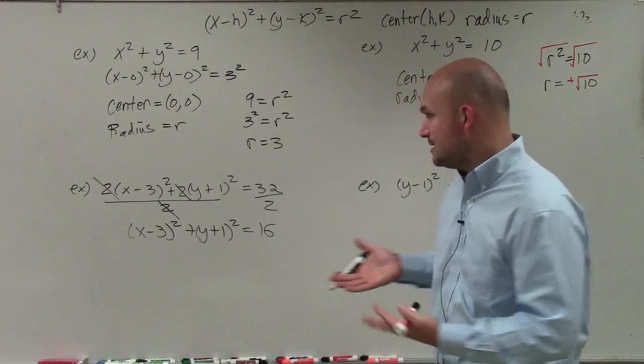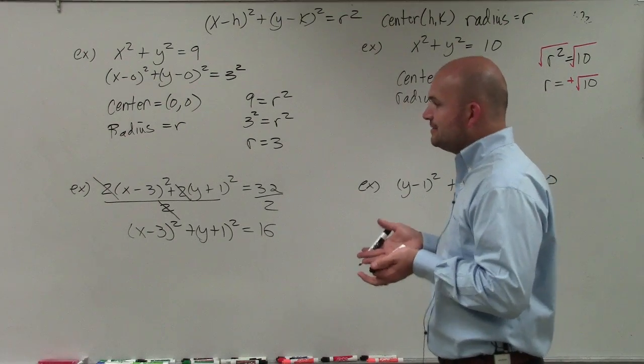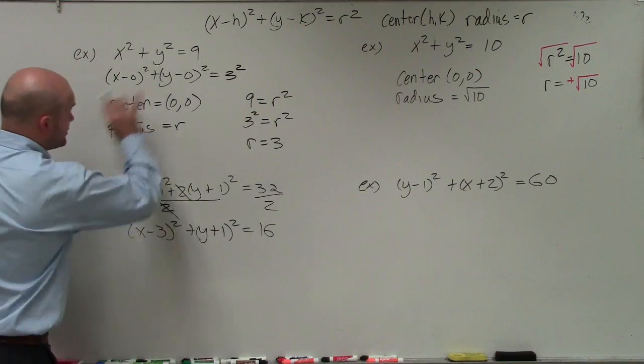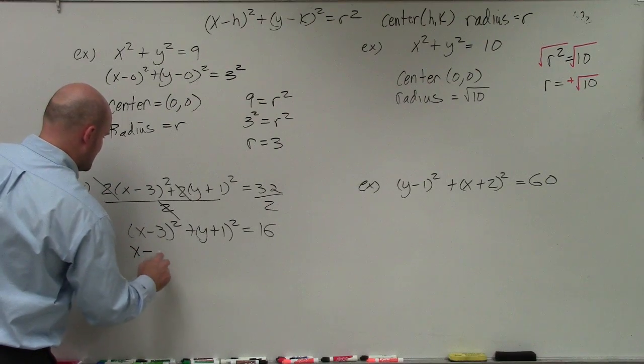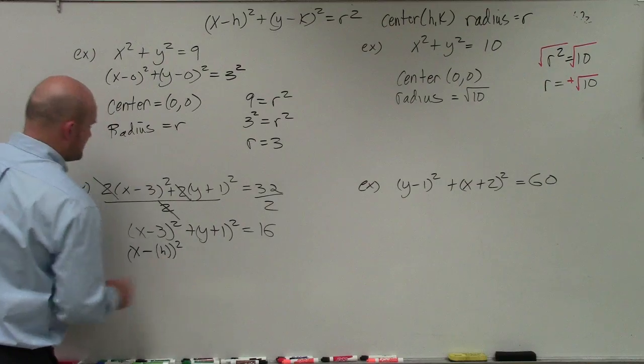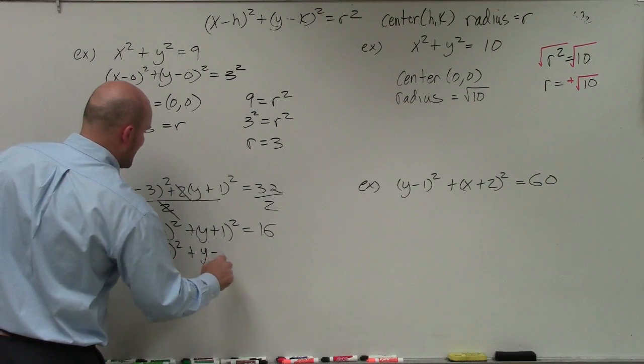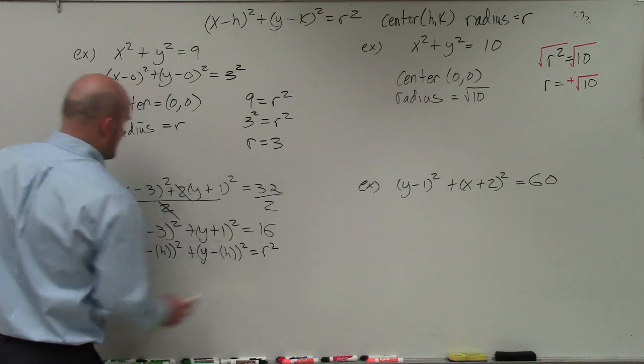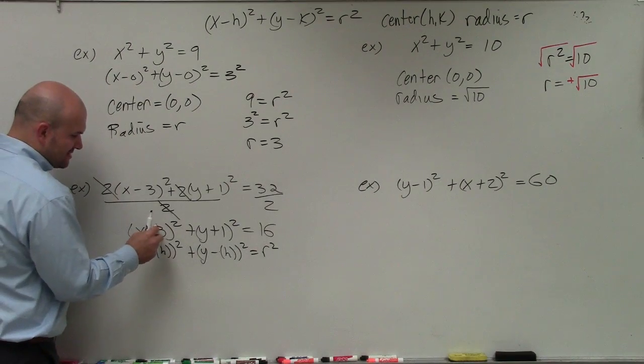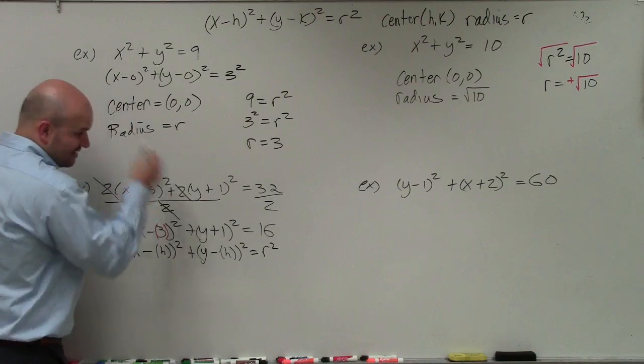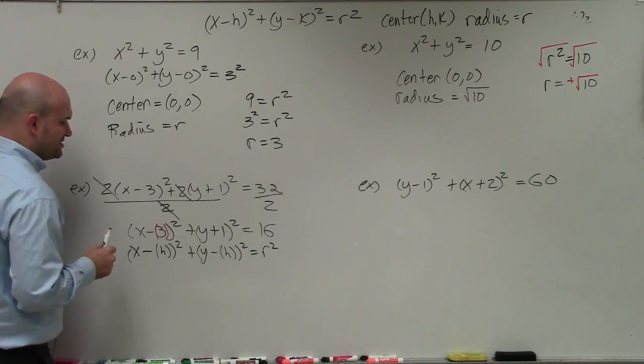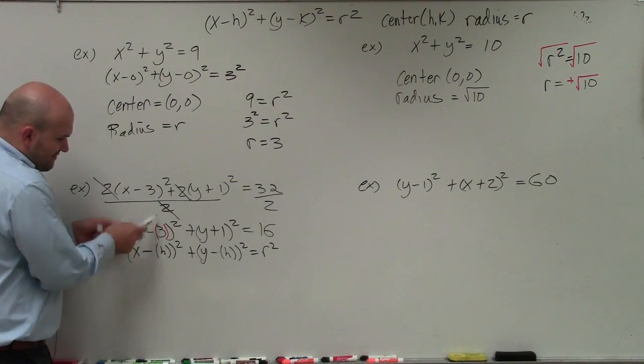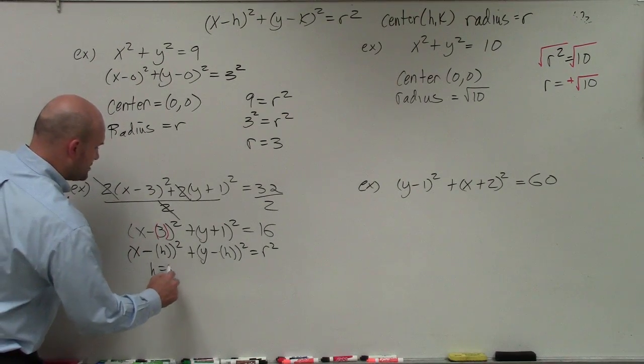Now, this one gets a lot of students. Remember, the formula for the general equation of a circle is x minus positive h plus y minus positive k squared equals r squared. If you notice here, these values are both the same. We can say that h is equal to 3.